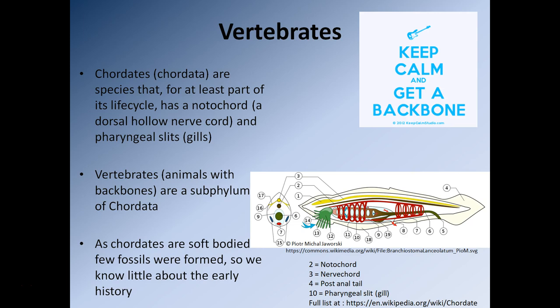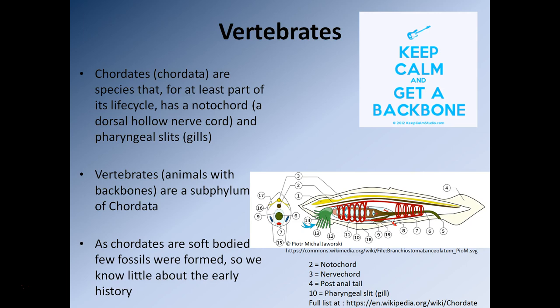Moving on to vertebrates: in order to be a vertebrate you must have a spine. The group Chordata includes organisms called chordates — species that for at least part of their life cycle have a notochord, a dorsal hollow nerve cord, and gills. We are members of Chordata. At some point during development in the womb, we have a notochord and, for a very short period, gill-like structures on the sides of our bodies, which disappear as we develop. Vertebrates are animals with backbones and are a subphylum of Chordata.